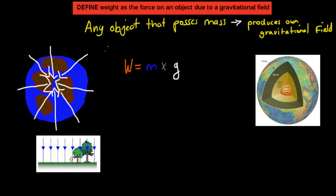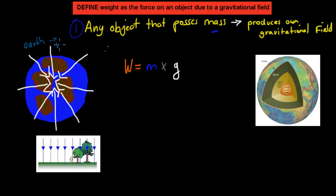Here's a pretty general but important statement: any object that possesses mass produces its own gravitational field. Obviously the Earth itself — that's pretty straightforward. The Earth has a relatively high mass, so it has a strong gravitational field, which we can experience every day. If we throw a ball in the air, it will come back down — it will not just keep going straight. The reason why it comes back down is because the Earth has its gravitational field, which pulls things back down.